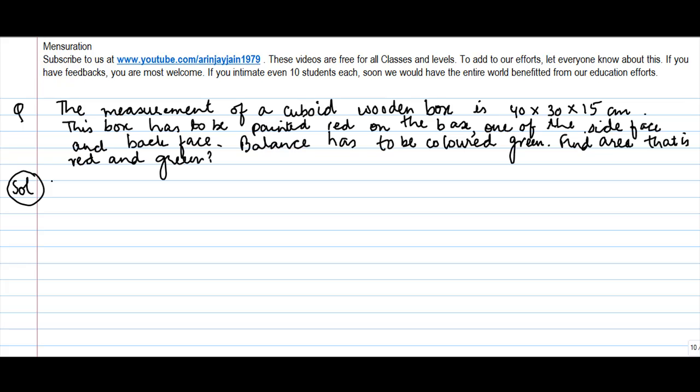Now, we are told that there is a cuboid shaped box. The measurement is 40, 30, 15. So, we say that the length is equal to 40, the breadth is equal to 30 and the height is equal to 15.